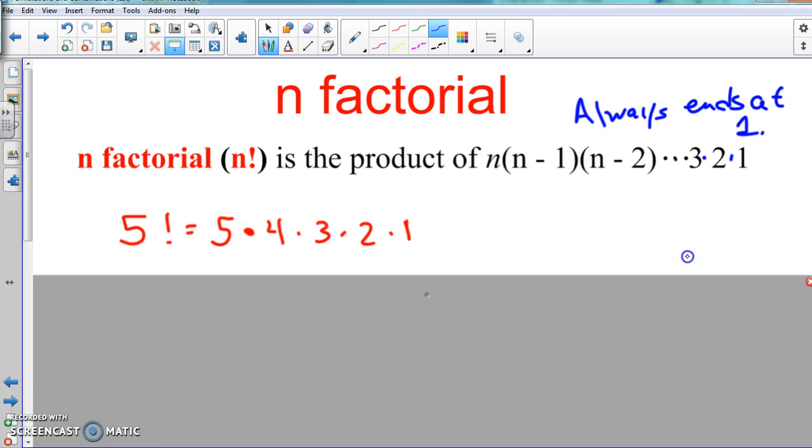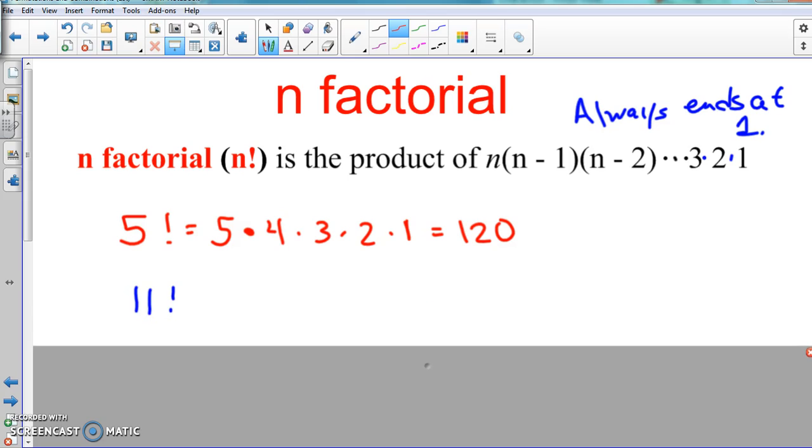So here, all you have to do is multiply that out: five times four times three times two times one. If you do that in a calculator or you can just do it in your head, you should get 120. That's it, that's all you got to do. That's all that's going on, that's n factorial, that's five factorial.